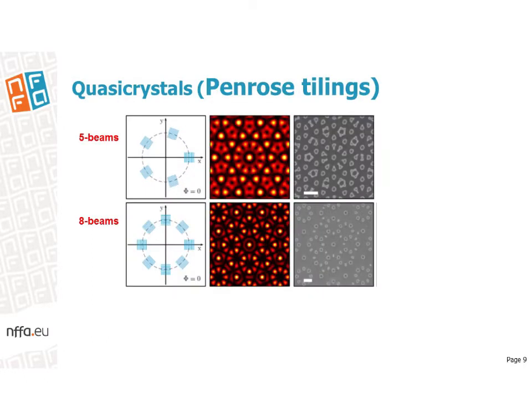In interference lithography, the number of interfering beams defines the symmetry of the periodic structure. In the case of five-beam interference, a five-fold symmetry is enforced, and it prevents the generation of a periodic pattern — there is no periodic structure or crystal with five-fold symmetry. If the system is forced to this symmetry, it produces so-called quasicrystals or Penrose tilings, where there is short-range order but in the long range the structure does not repeat itself. This behaviour is also observed for the case of eight beams.